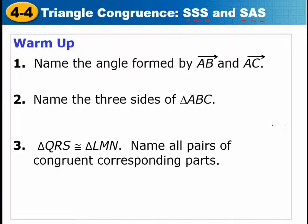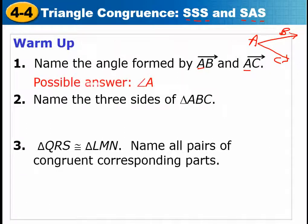We're going to start with a little warm-up. The first one says name the angle formed by ray AB and ray AC. Note that A is the endpoint of both rays, so this must be angle A — the vertex. You could name it angle A, or angle BAC, or angle CAB.